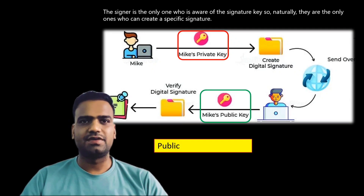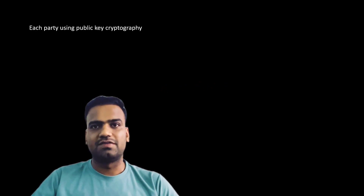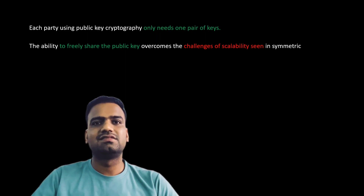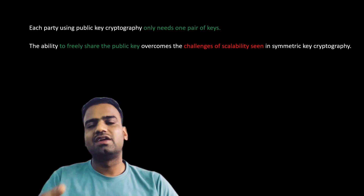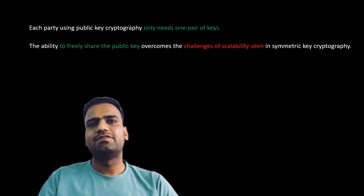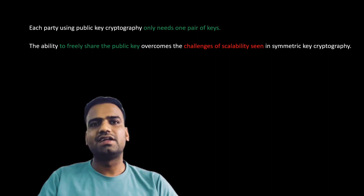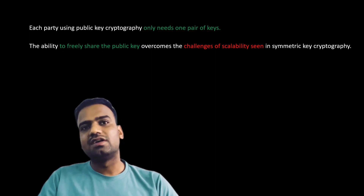Asymmetric encryption is also called public key cryptography because the public key can be freely shared. One advantage is that each party only needs one pair of keys, and the ability to freely share the public key overcomes the scalability challenges of symmetric encryption. In symmetric encryption you needed a separate key for every pair of communicating parties, which was difficult to manage. With asymmetric encryption, you only need your private key kept safe while your public key is shared with anyone who wants to send you a message.